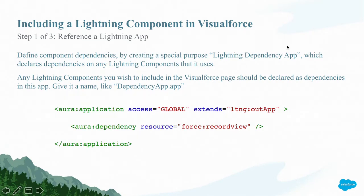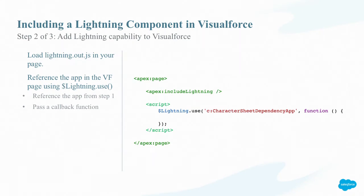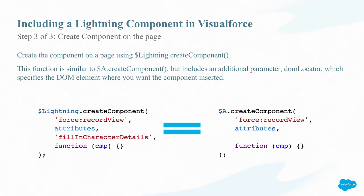There were three steps to include Lightning Out in any Visualforce page. Step one: reference a lightning app — create the lightning out dependency application depending on force:recordView. Step two: include Lightning Out in your Visualforce page using apex:includeLightning and call $lightning.use with your dependency app name. Step three: call $lightning.createComponent to create any custom or standard lightning components inside the Visualforce page, passing in the component name, initial attributes, and a DOM ID. This API is very similar to dynamically creating Aura components in a custom lightning component, except you say $lightning instead of $A.